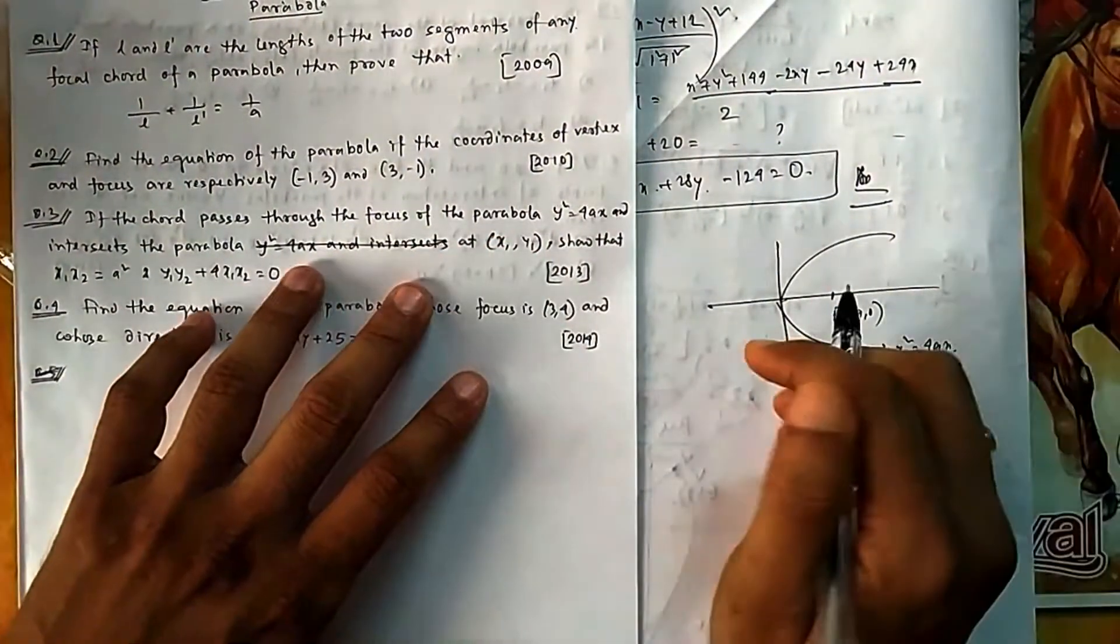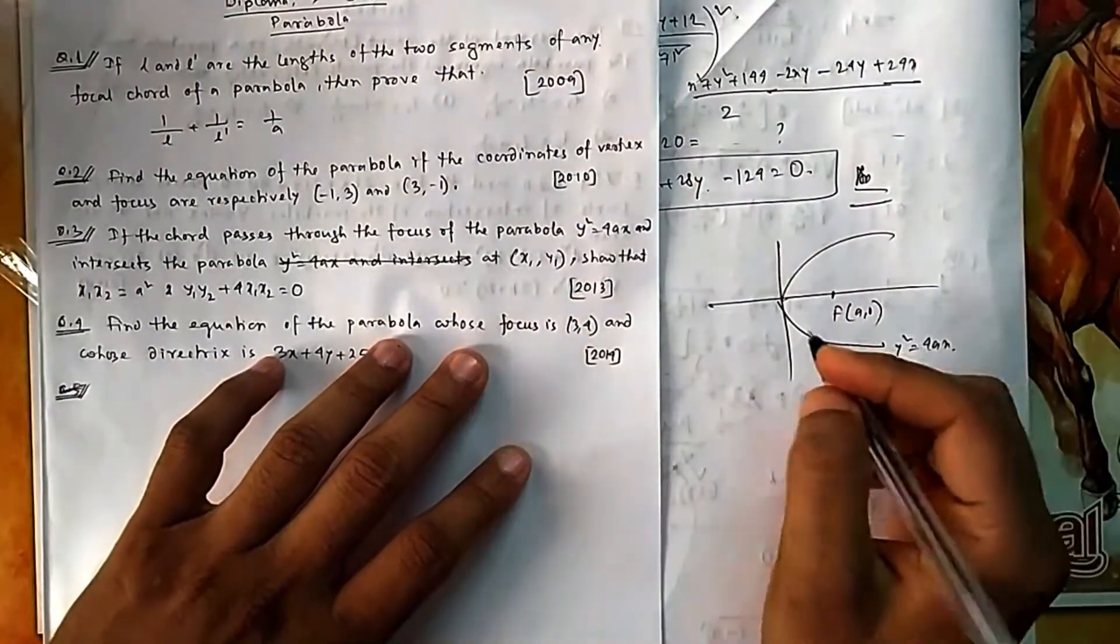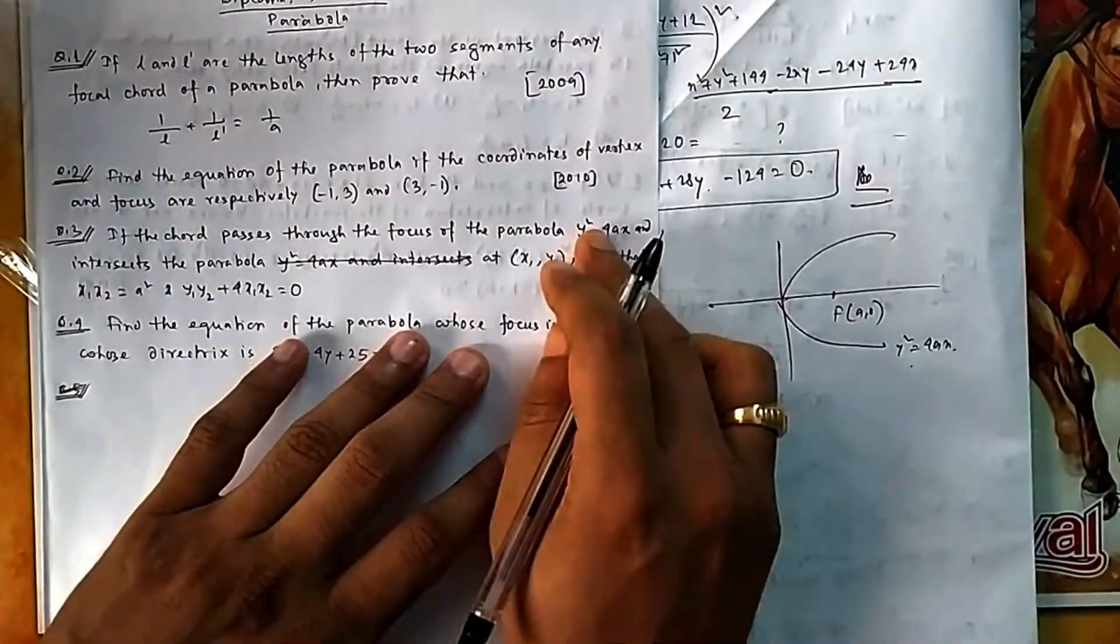So if you take the focus (a, 0), it is y² = 4ax they have given. If they don't give, you take y² = 4ax; if they give, you have to take that one because it is given, so you will take this one only.